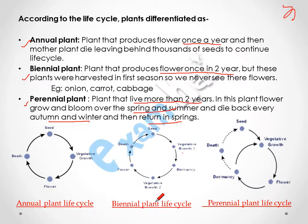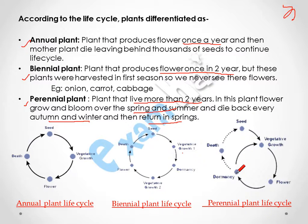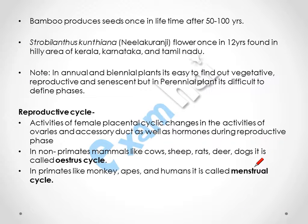In annual and biennial plants, you can easily distinguish between the vegetative, reproductive, and senescence phases. But in perennial plants, we are not able to distinguish between the different phases, as the plant has the choice to go either into the senescence phase or back into the vegetative phase. Notably, the bamboo plant produces seeds once in a lifetime after 50 to 100 years. Strobilanthus kunthiana, which is the Neelakurenji flower, produces flowers once in 12 years and is found in the hilly areas of Kerala, Karnataka, and Tamil Nadu.